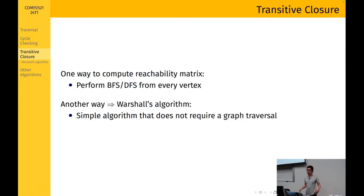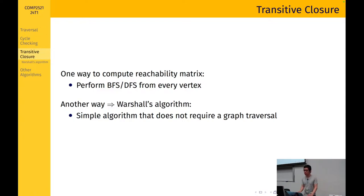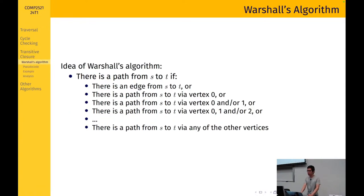We could compute the reachability matrix by performing BFS or DFS from every vertex. But another elegant way is called Warshall's algorithm, which doesn't require graph traversal and can even use O(1) extra memory. The idea: there is a path from S to T if there is an edge from S to T, or there is a path from S to T via vertex 0, or via vertices 0 and 1, and so on.